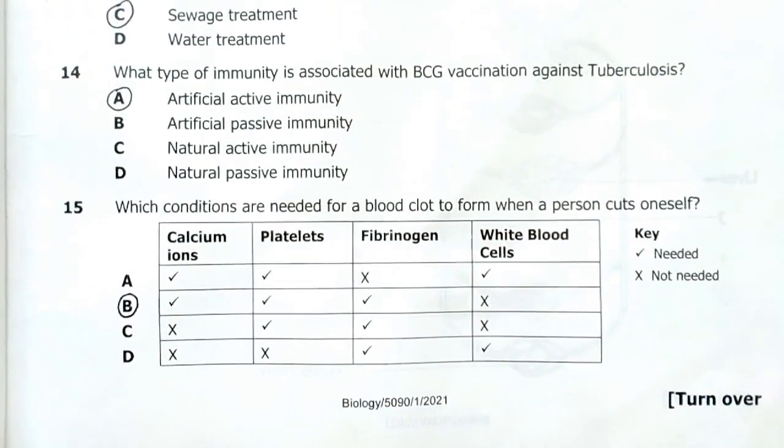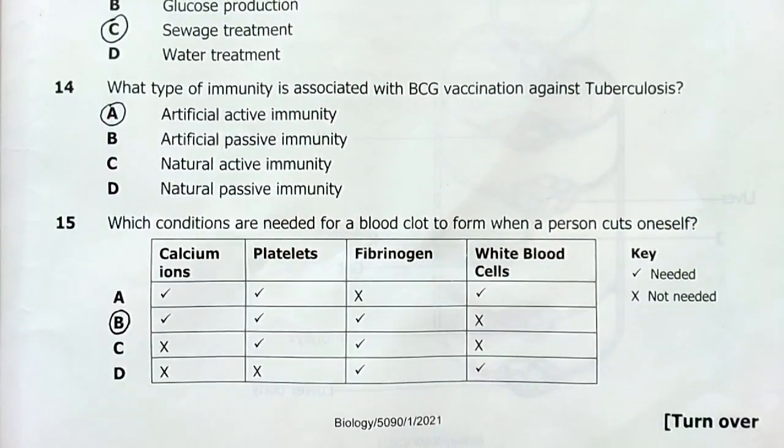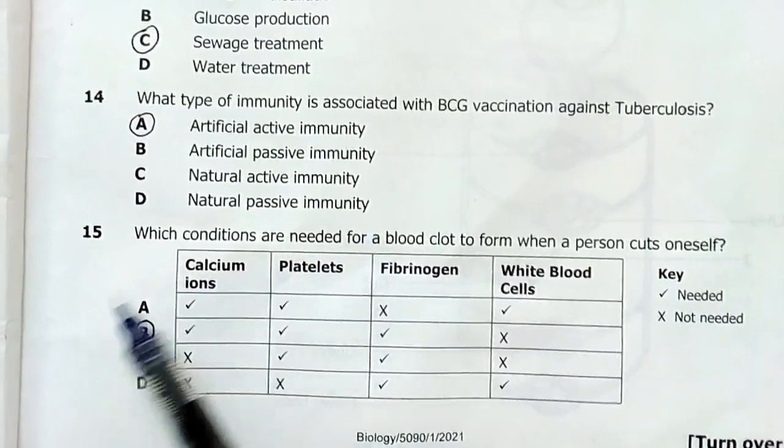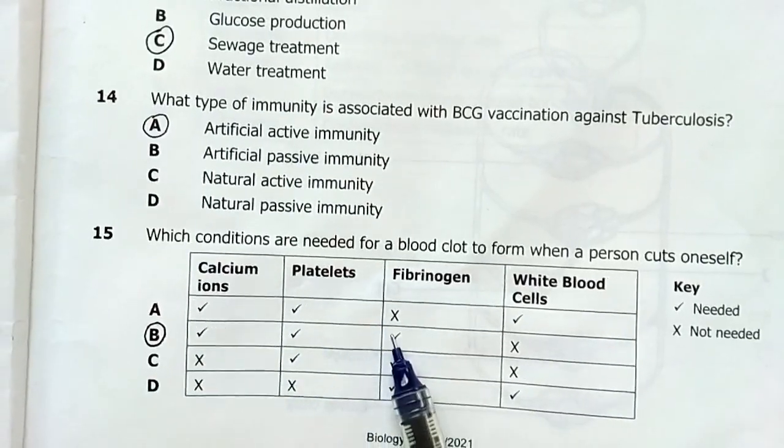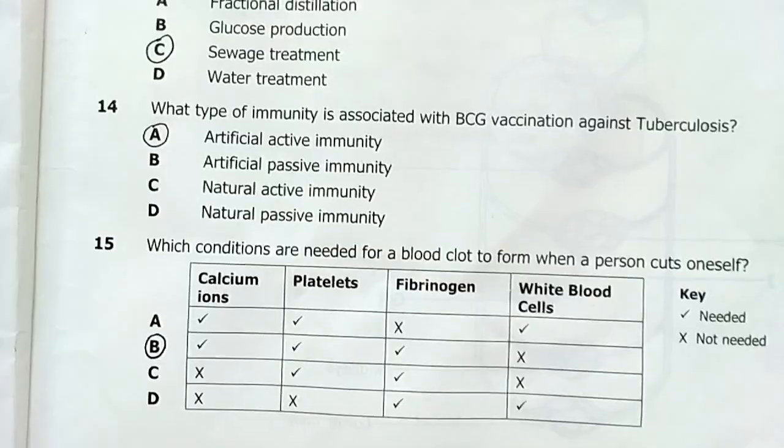Number 15, which conditions are needed for a blood clot to form when a person cuts one's self? B is my answer. You need calcium ions, you need platelets, you need fibrinogen. You don't need white blood cells. The answer is B.